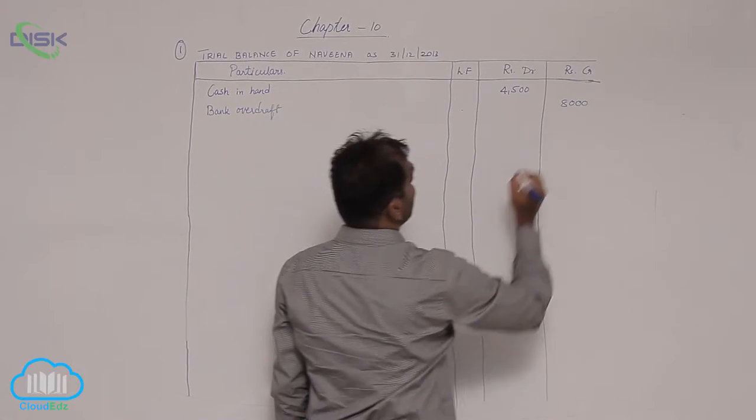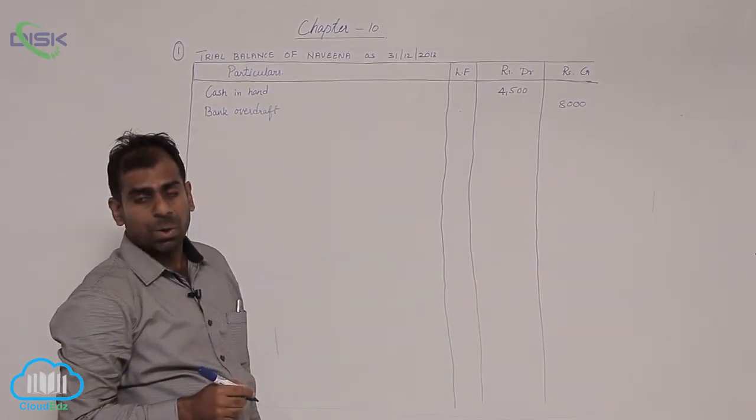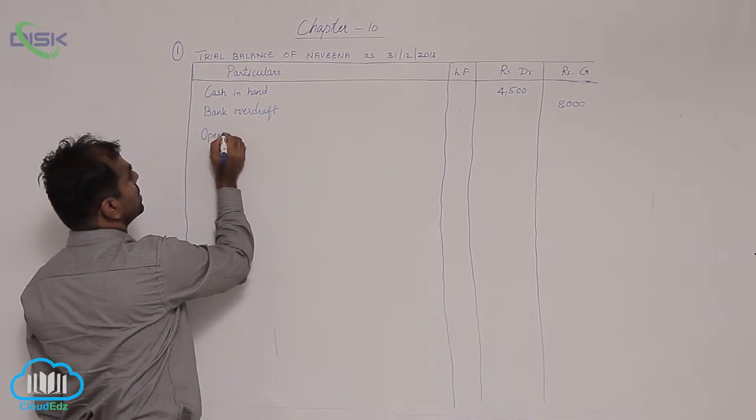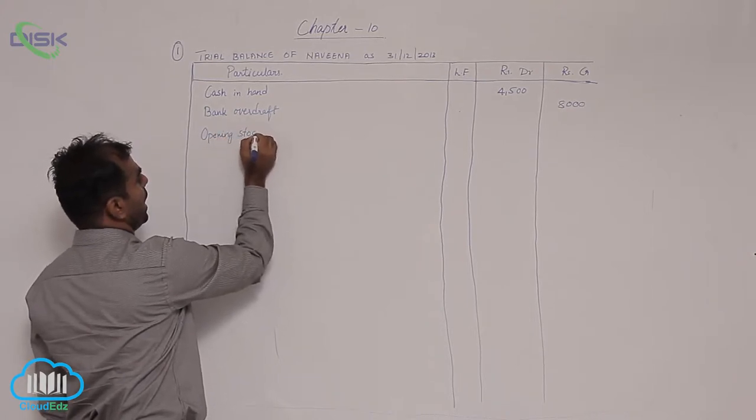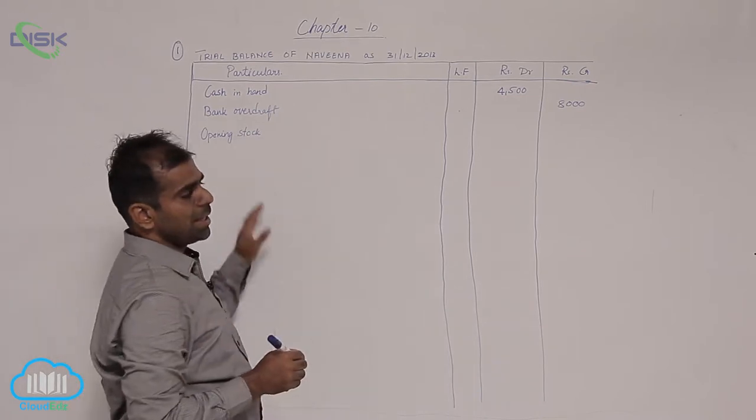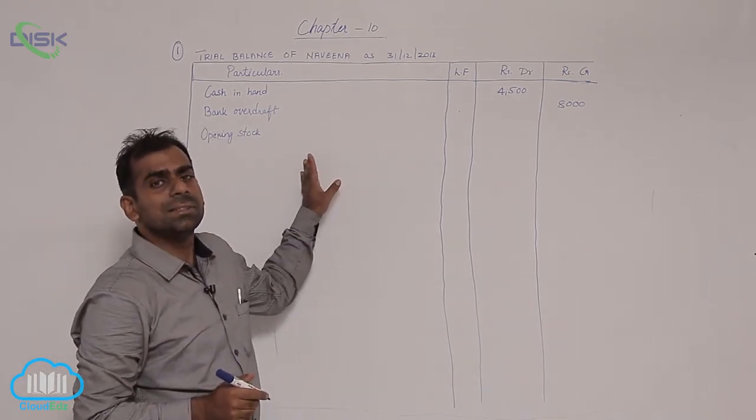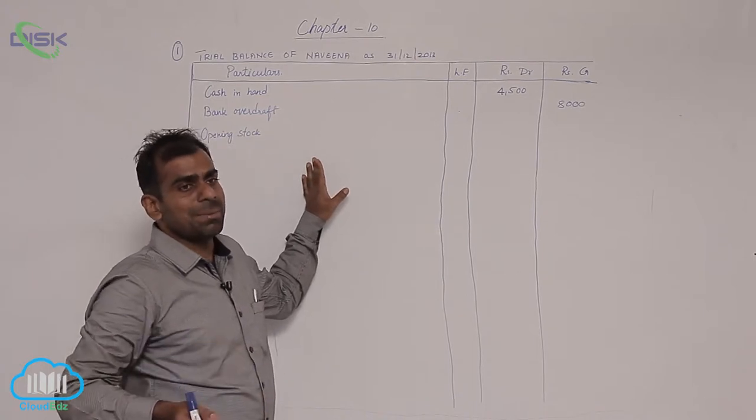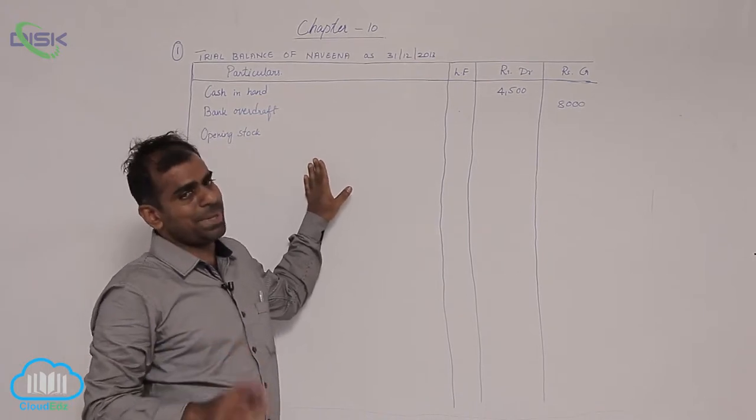Now the next item is opening stock. Opening stock represents goods or it is closing stock of last year. Generally opening stock or goods will show debit balance. Why? Because they represent purchases made in the previous year.